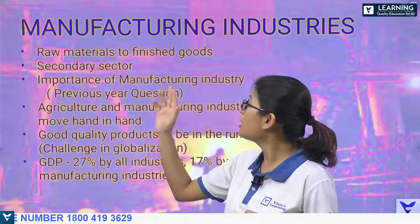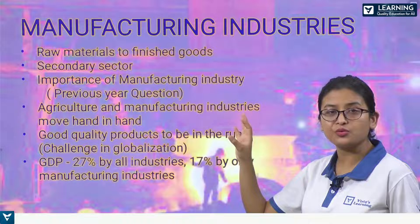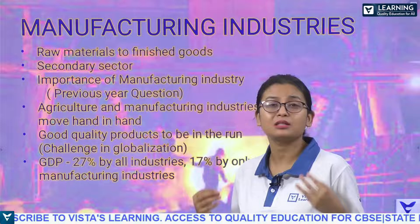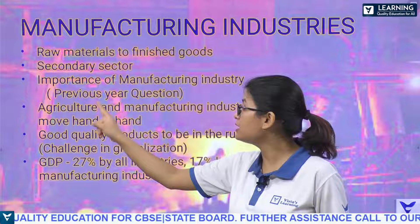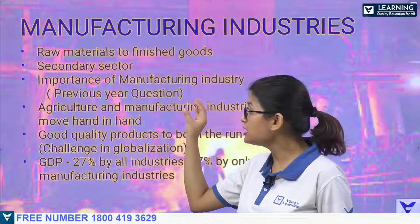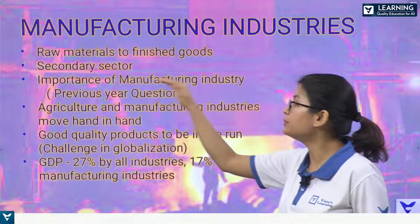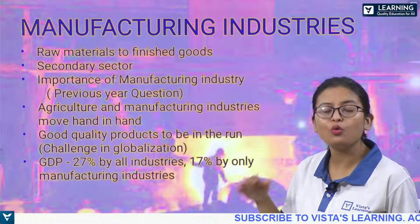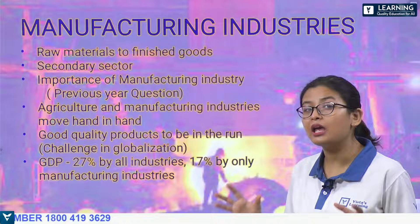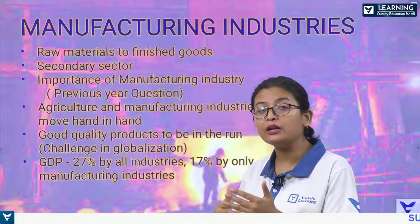Now let us talk about the importance of manufacturing industry — how it impacts our economy, grows our GDP, and increases national income. The secondary sector industries are interdependent; they cannot run without each other. They run parallelly. For example, only growing cotton gives you raw material. There is not much you can do with just raw cotton alone.